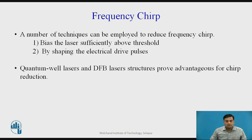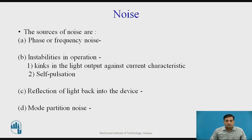Several techniques can be employed to reduce frequency chirp. One approach is to bias the laser sufficiently above threshold so that the modulation current does not drive the device below threshold, where the rate of change of optical output power varies rapidly with time — though this gives an extinction ratio penalty. Another method involves damping the relaxation oscillations at turn-on and turn-off by shaping electrical drive pulses. Quantum well lasers and multi-electrode DFB lasers also provide improved performance for chirp reduction.